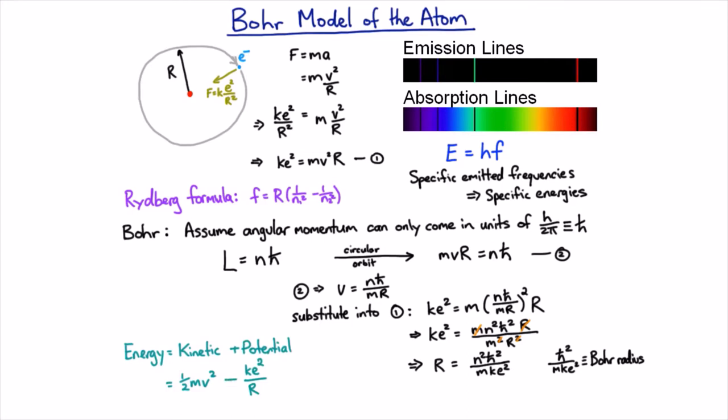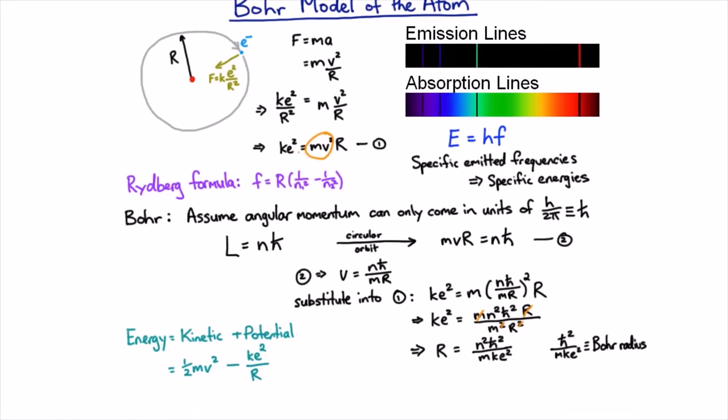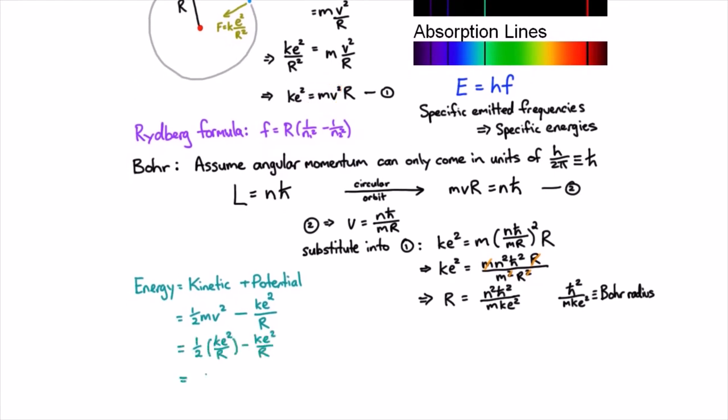To deal with the kinetic energy part, we notice we have an mv squared in that equation, which makes it easier. Those two terms look almost the same. The fact that we have quantized radii means we're going to have quantized energy. We just substitute that radius into the energy and we get the result.